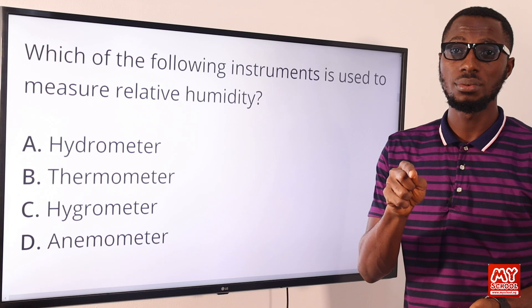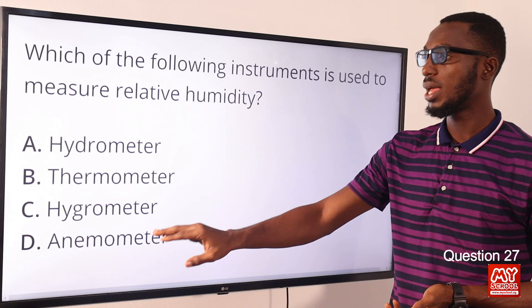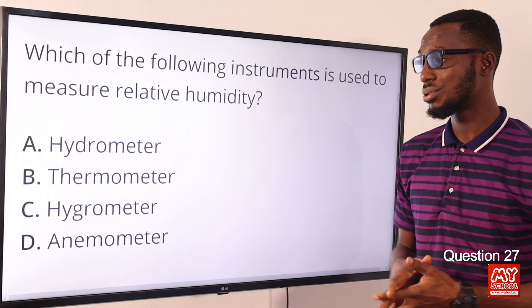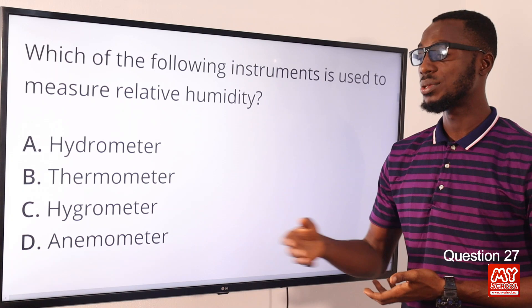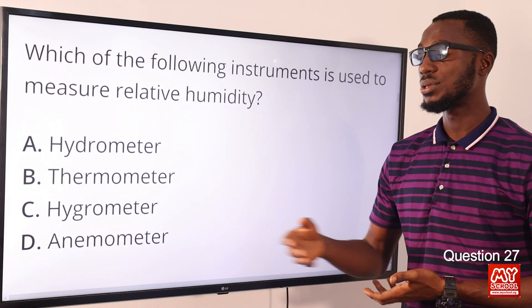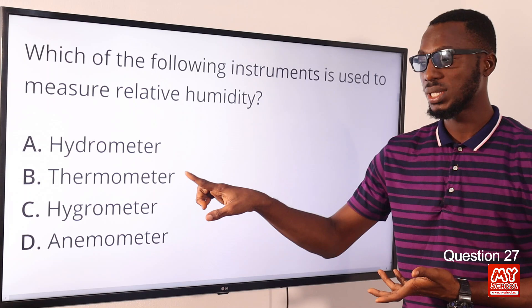Question 27: The instrument used to measure relative humidity is the hygrometer. A hydrometer is used to measure specific gravity or density. A thermometer is for temperature. An anemometer measures wind speed, and a wind vane shows wind direction. So the correct option is option C for hygrometer, used to measure relative humidity.